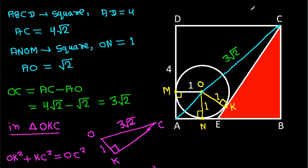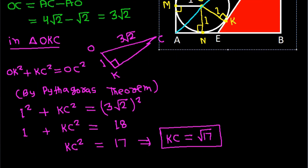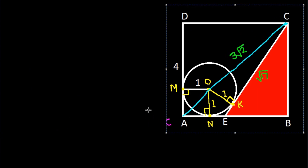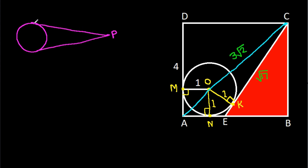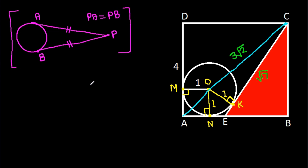We get KC = √17. Now, in any circle, from any external point P, if we draw two tangents to the circle at points A and B, then PA = PB. So from point E, EN = EK. Suppose EN = EK = x.